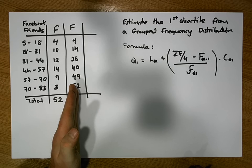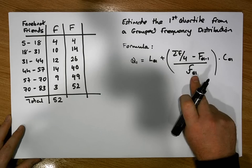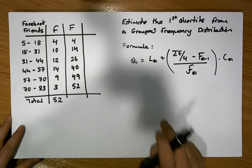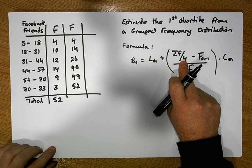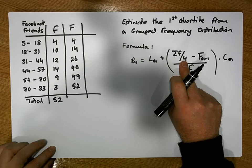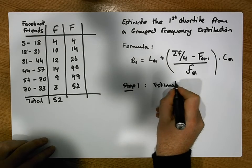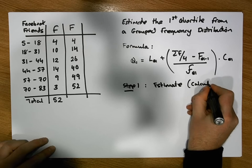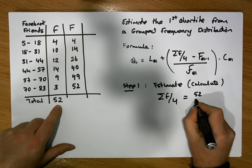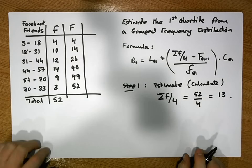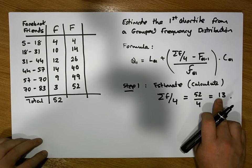Once we've constructed the cumulative frequency, we go back to our formula. The key value is σf/4. σf represents how many observations we have, so σf/4 represents how many observations would be in a quarter of the data. Step 1 is to calculate σf/4: that's 52 divided by 4, which equals 13. So the first quartile should be between the 13th and 14th values in our dataset.